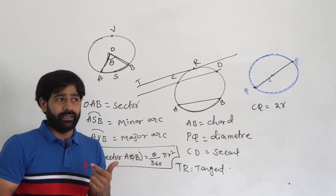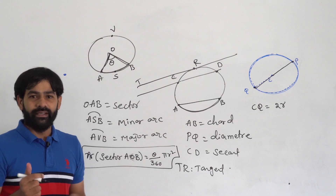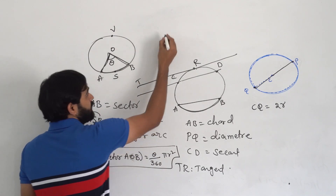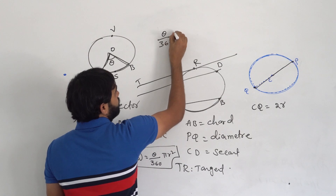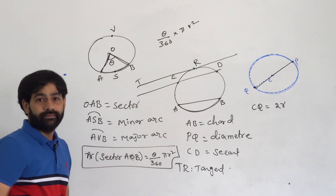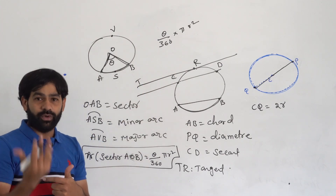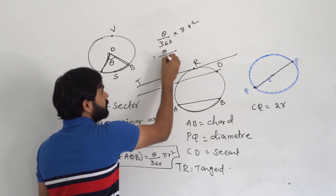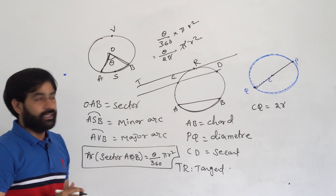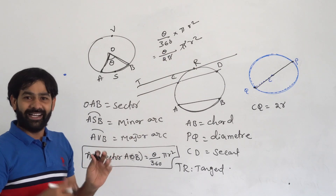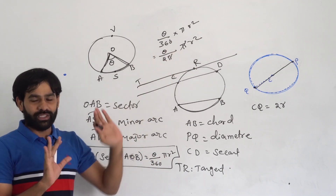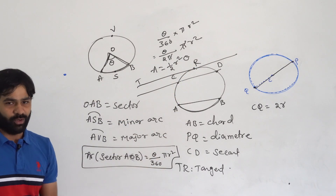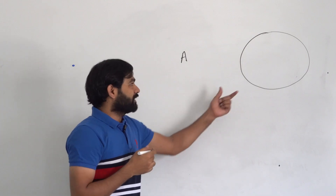You may have seen another formula: area of the sector equals half r squared theta. That is not a new formula — it comes from the same one. Writing theta over 360 times π r squared, and replacing 360 with 2π, the π's cancel and you get half r squared theta. Both formulas are the same. So we have covered the circle and all related terms: chord, secant, diameter, radius, circumference, and area of sector.